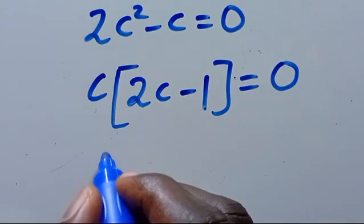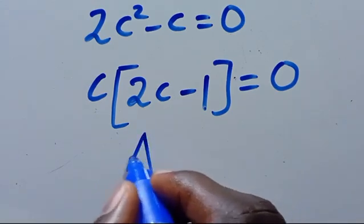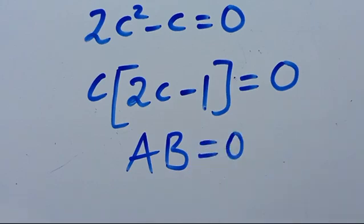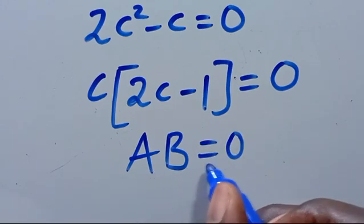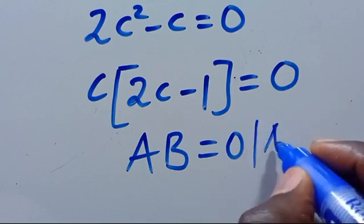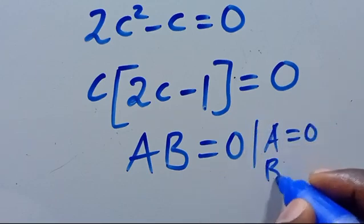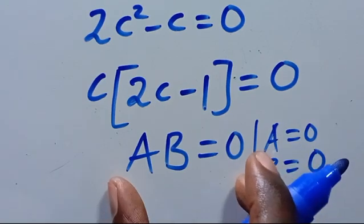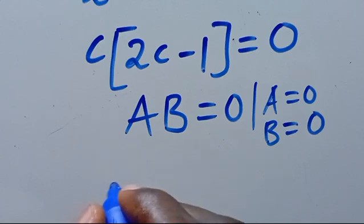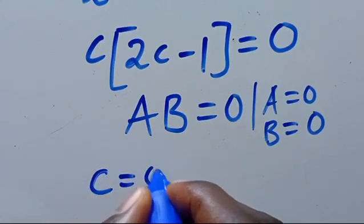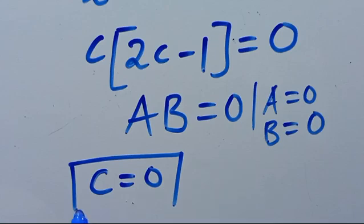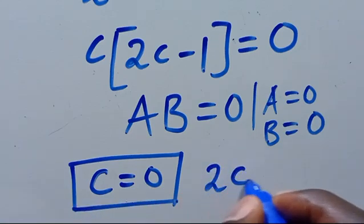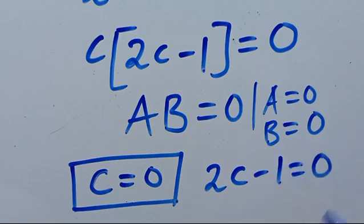Recalling that when we have A times B equals 0, for AB to equal 0 either A equals 0 or B equals 0. So from here we have C equals 0 as the first solution, or 2C minus 1 equals 0.